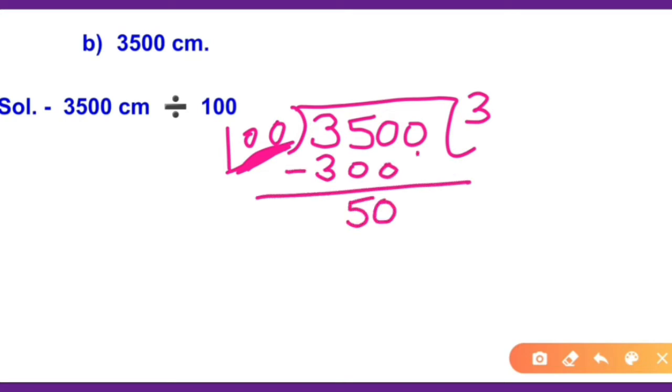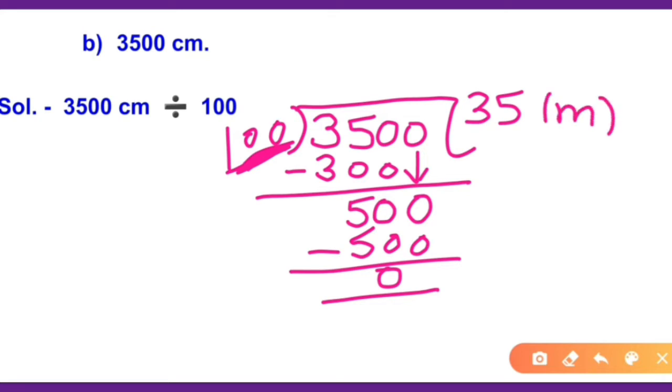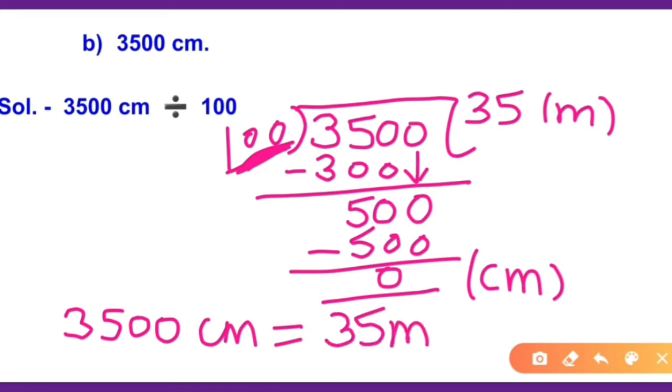And you will get 50 and you bring down this 0, and 100 times 5 is 500. Now you have no number to bring down, that means you have a 0 remainder. Your quotient will be the big unit, means meter, and your remainder will be the small unit, means centimeter. So now the answer will be 3,500 centimeters equals 35 meters.